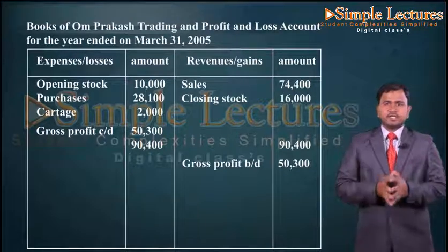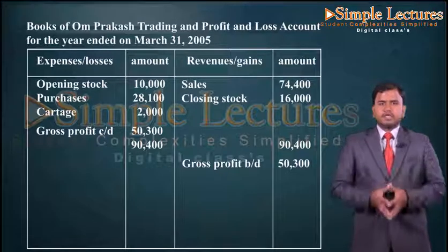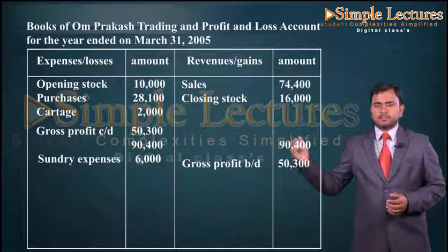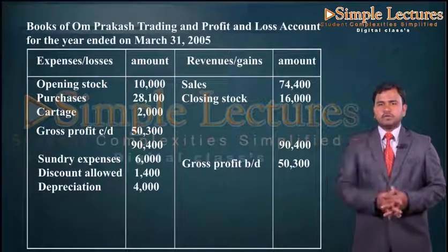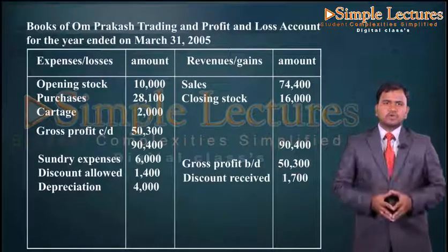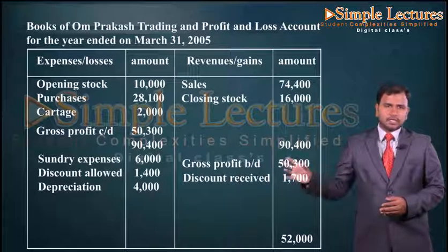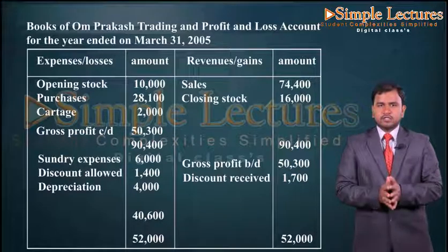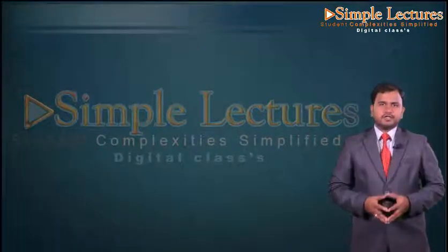Indirect expenses are recorded on the debit side: sundry expenses six thousand, discount allowed one thousand four hundred, depreciation four thousand. Discount received is an income so it goes on the credit side: discount received one thousand seven hundred. We close the account — total of the credit side is fifty two thousand; the same is recorded on the debit side. The difference is forty thousand six hundred, which is net profit, to be transferred to the capital account.